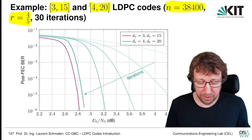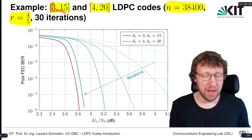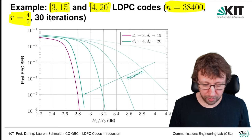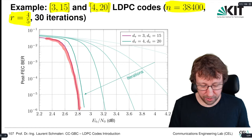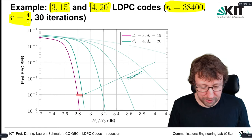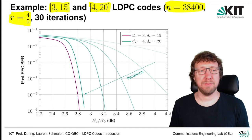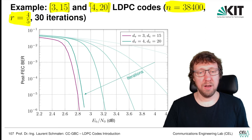Looking at how performance depends on code parameters: choosing d_v=3, d_c=15 gives slightly better performance than d_v=4, d_c=20. The difference is small — less than 0.1 dB — but it is real. The next chapter will explain where this difference comes from.